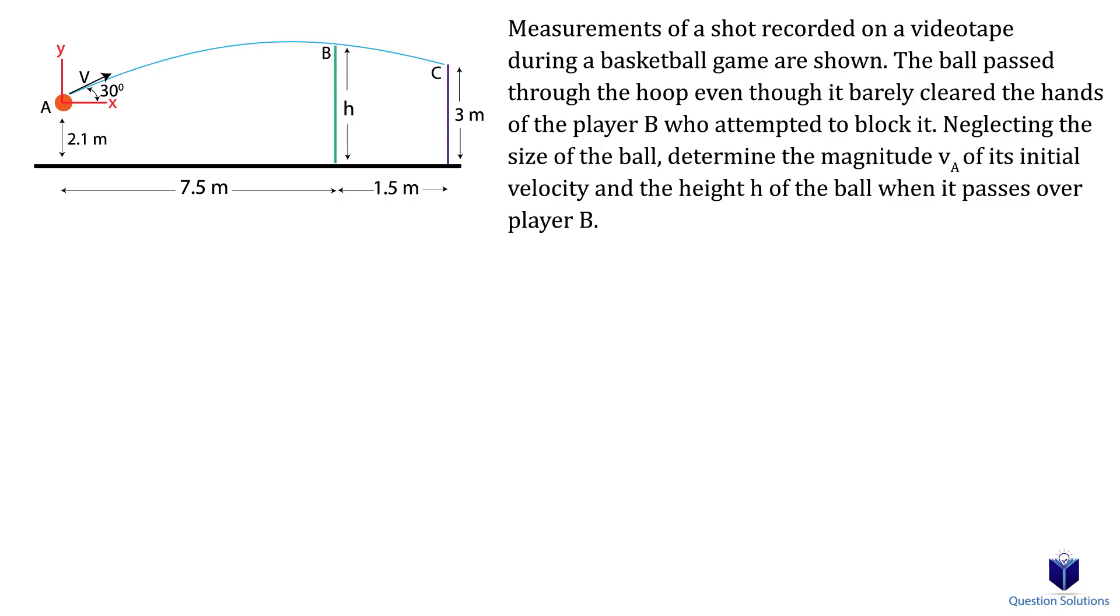In this problem, we need to figure out the velocity of the ball at which it was thrown. We also need to figure out the height of the ball as it passes player B. We will first figure out the velocity of the ball and then calculate the height afterwards.